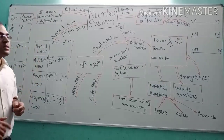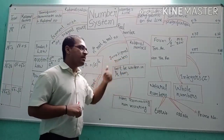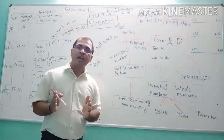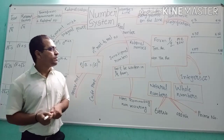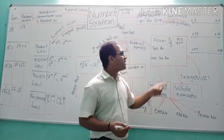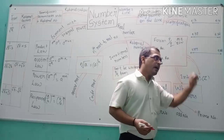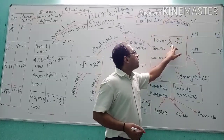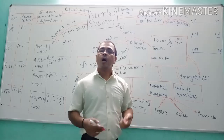Real numbers are divided into two categories: rational numbers and irrational numbers. Rational numbers are the numbers which can be written in p by q form. Here, p belongs to Z — meaning the numerator is an integer — and q belongs to N — meaning the denominator is a natural number.